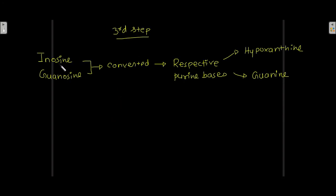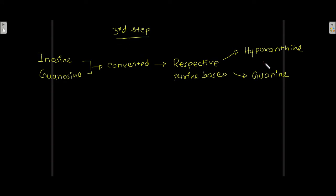In the third step, inosine and guanosine are converted into their respective purine bases: hypoxanthine and guanine. So at the end of the third step, hypoxanthine and guanine are formed.